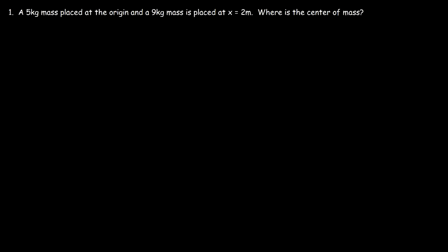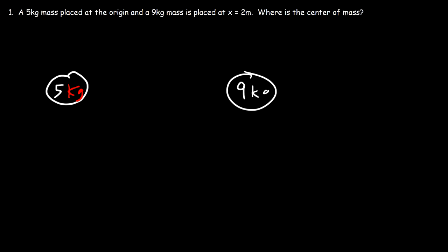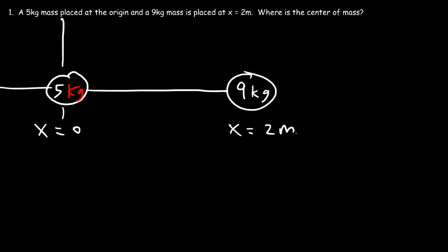A 5 kilogram mass is placed at the origin and a 9 kilogram mass is placed at x equals 2 meters. Where is the center of mass? Let's draw a picture. Here's the 5 kilogram mass, and this is going to be the 9 kilogram mass. This is at position 0 with respect to the origin, and this is at x equals 2.